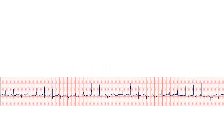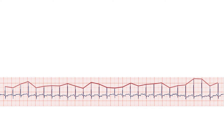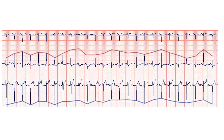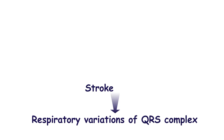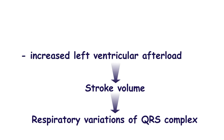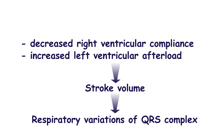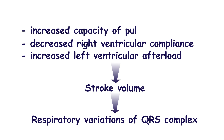Varying QRS amplitude secondary to breathing may be explained by the fact that ventricular preload and afterload increase during inspiration, so ventricular chamber size may influence QRS wave amplitude. It is known that left ventricular stroke volume decreases during inspiration. The main causes of the fall in stroke volume during inspiration are increased left ventricular afterload, decreased right ventricular compliance due to increased right ventricular volume, and increased capacity of pulmonary vessels due to inflation.